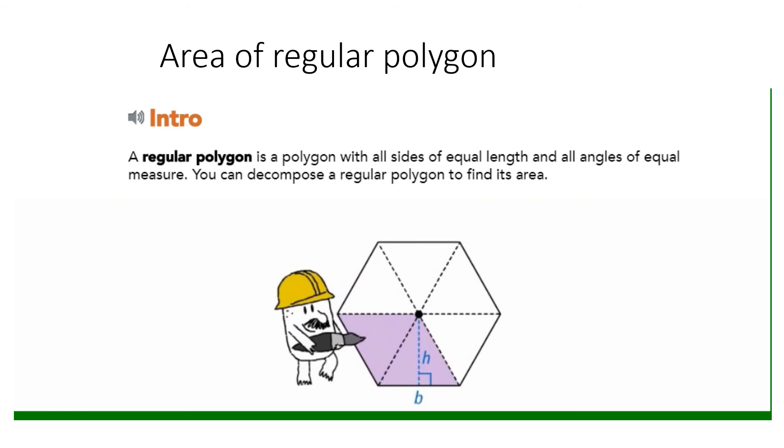After you find the area of one triangle, you can multiply the area by six to find the area of the entire hexagon.